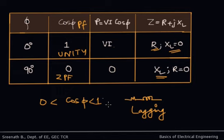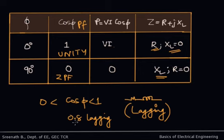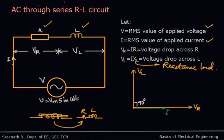Whenever you talk about power factor, you must associate its nature along with the value — for example, 0.8 lagging or 0.6 lagging. We will see why it is necessary to describe the nature of the power factor in future lectures. Hope you have understood this topic of AC through a series RL circuit. Go through the lecture again and then further analyze yourself. Thank you.